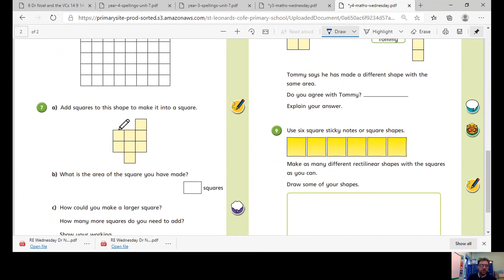Number seven, add squares to the shape to make it a square. So where can we add some squares in to make it a square? So remember the properties of a square, each side has to be the same length.